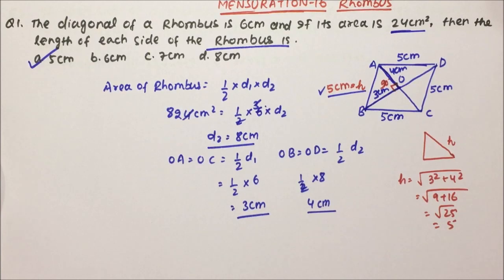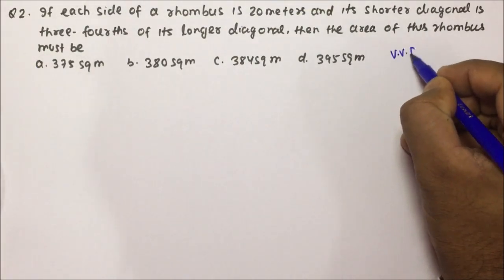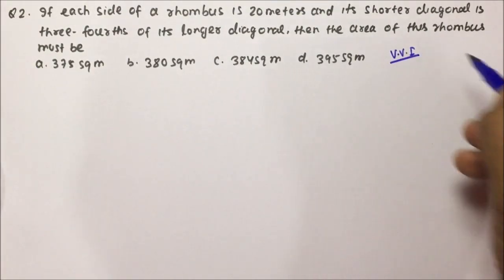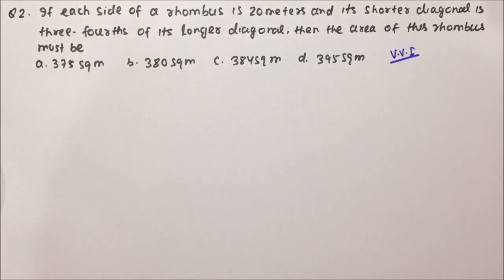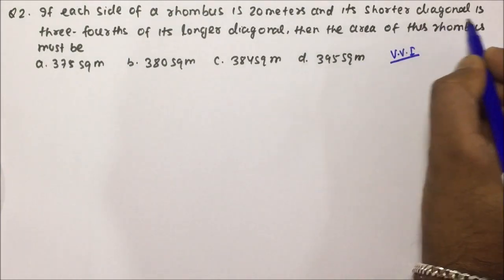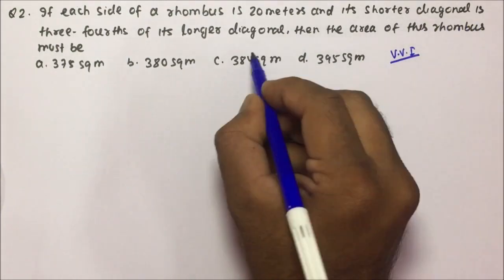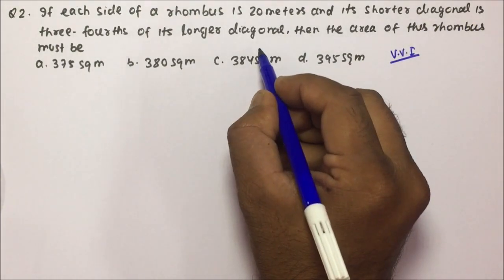Now moving towards question number 2, which is a very important question. If each side of a rhombus is 20 metres, and its shorter diagonal is 3/4 of its longer diagonal, find the area.